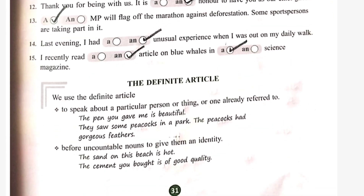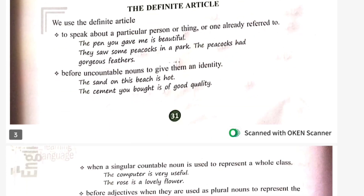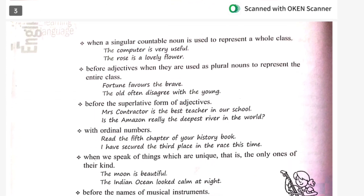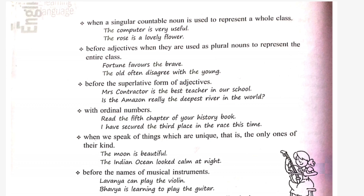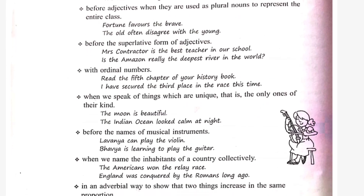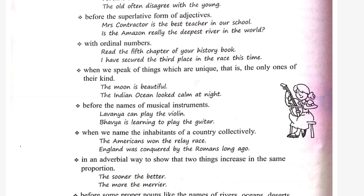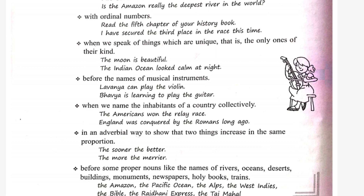Now let's talk about the definite article 'the'. When we speak about a person who is already referred to — once 'a' is used, then it becomes 'the'. Uncountable nouns. When the singular countable noun represents the whole class. Before adjectives with the superlative degree. With ordinal numbers: the fifth, the second, the first.